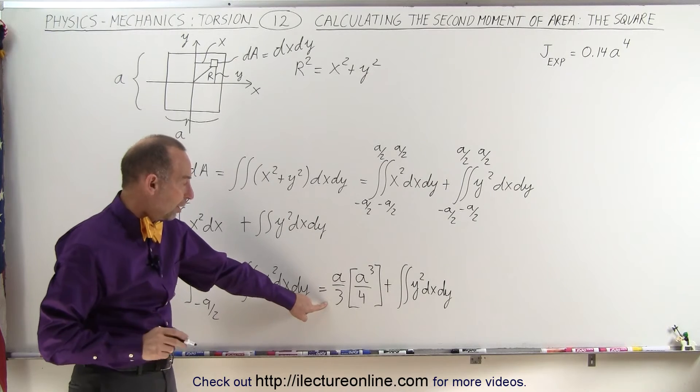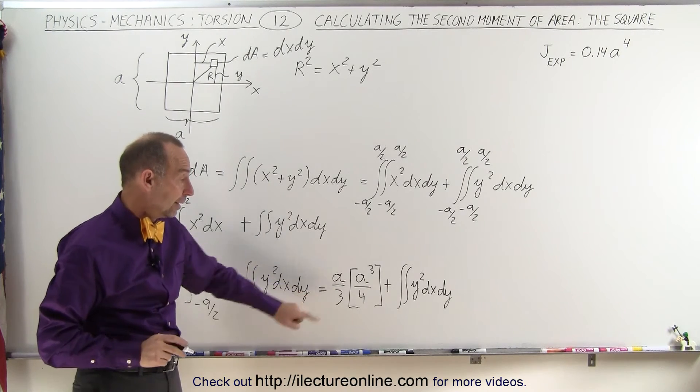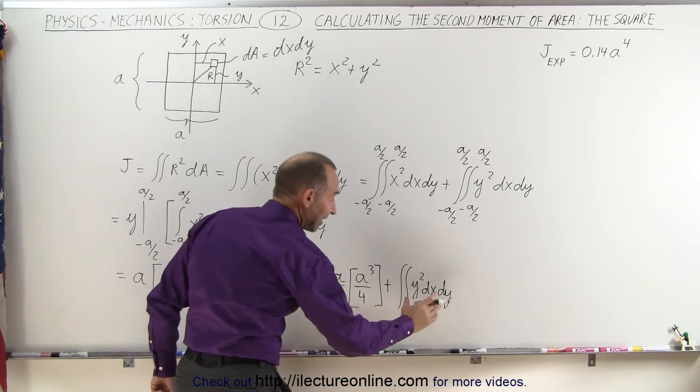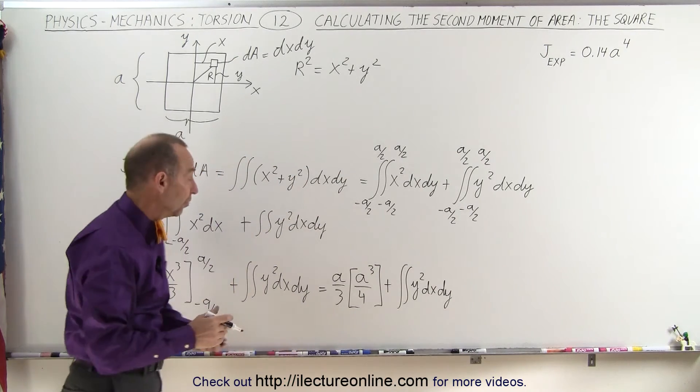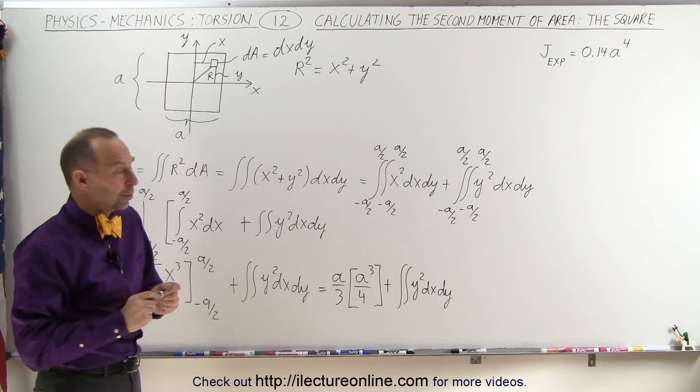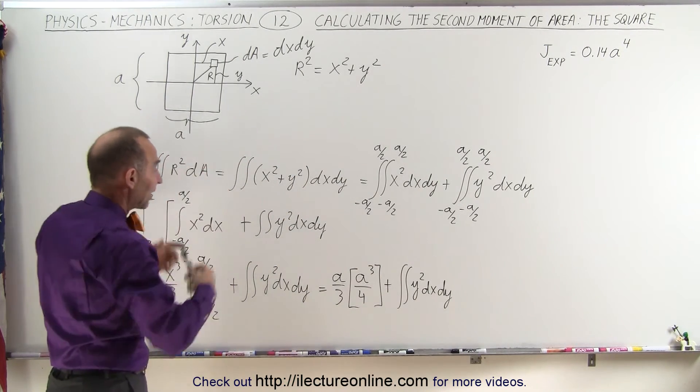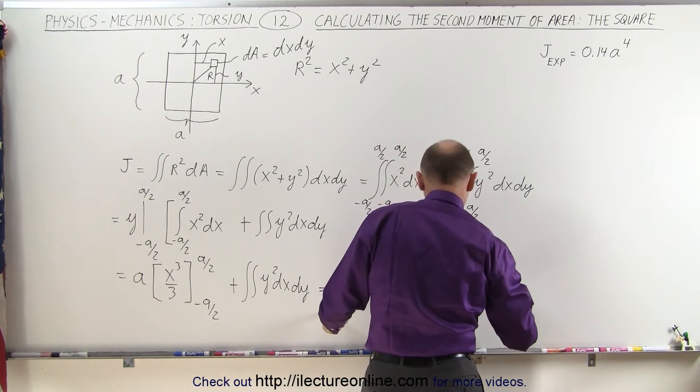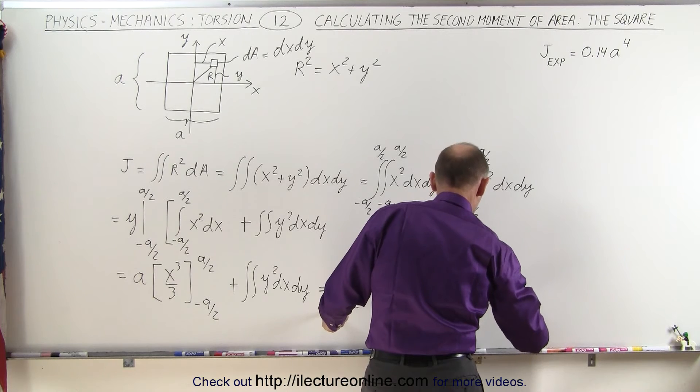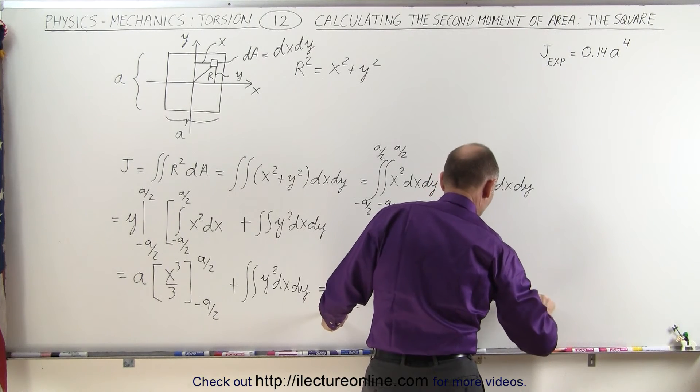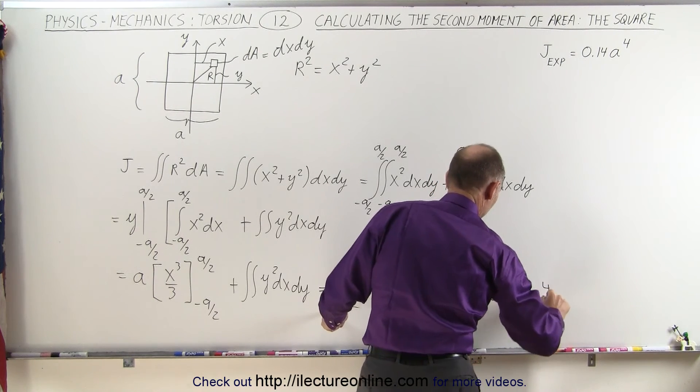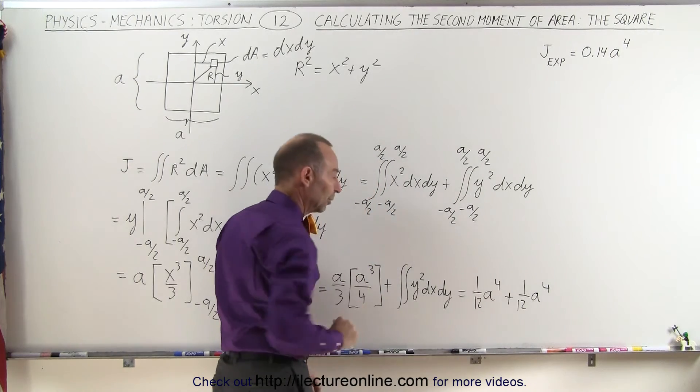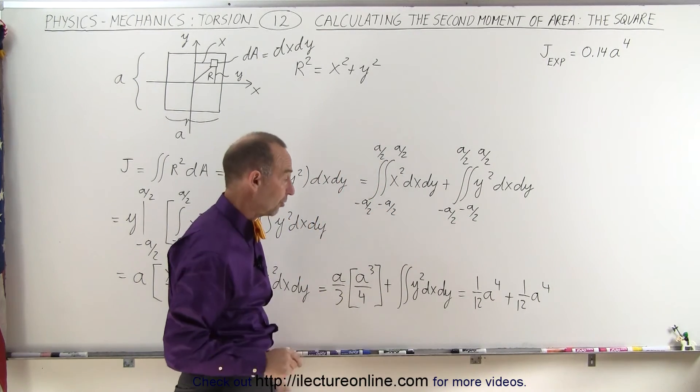Now, notice we get 1 twelfth a to the fourth here, and since this is exactly the same integral, because of the symmetry, we'll get the exact same result. This will then end up giving us equal to 1 twelfth a to the fourth plus 1 twelfth a to the fourth, because we'll get the exact same result with the second integral. You can try it, and you'll see.